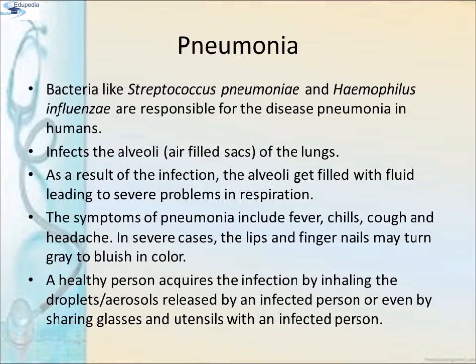Pneumonia: Bacteria like Streptococcus pneumoniae and Haemophilus influenzae are responsible for pneumonia in humans, which infect the alveoli — the air-filled sacs of the lungs. As a result of the infection, the alveoli get filled with fluid leading to severe problems in respiration. Symptoms include fever, chills, cough and headache. In severe cases, the lips and fingernails may turn grey to bluish in colour. A healthy person acquires the infection by inhaling droplets or aerosols released by an infected person, or by sharing glasses and utensils with an infected person.